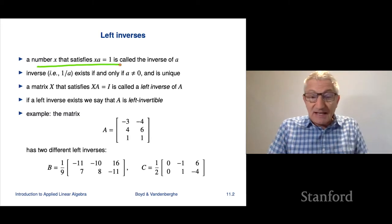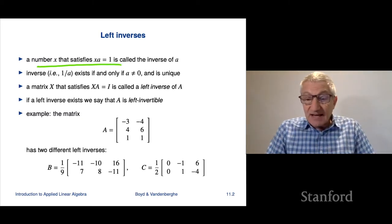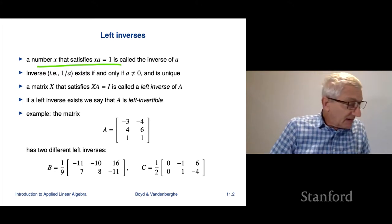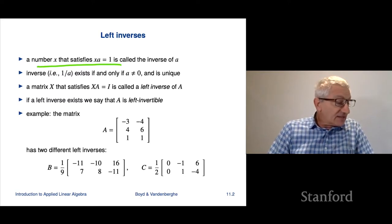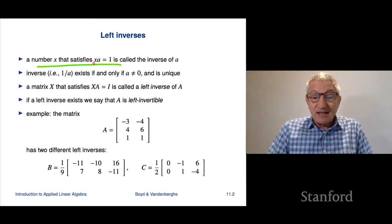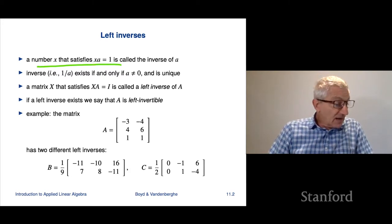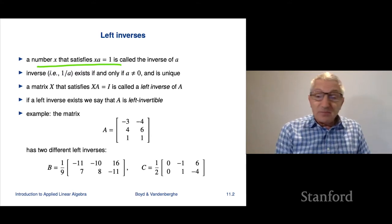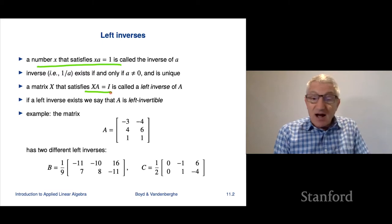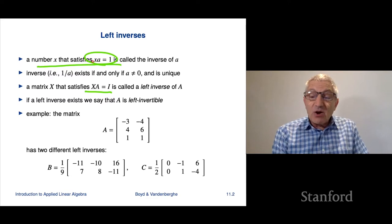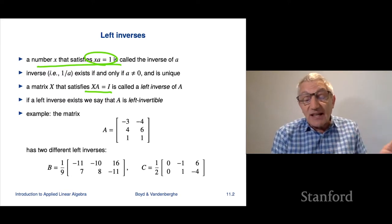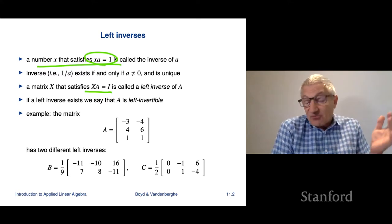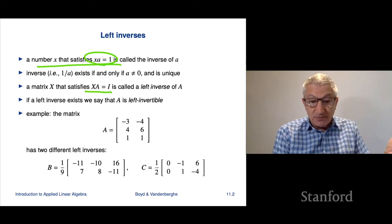Just to give a rough idea: if I have a number x and it satisfies xa equals 1 — that just means the product of it and another number a is 1 — then it's called the inverse, and we write it as 1 over a. That exists only if a is not equal to 0, because if a is 0, there's certainly no number x for which xa equals 1. There's only one inverse of 2 and it's one half. By analogy, a matrix x that satisfies xA equals I is called a left inverse — it's left because x operates on the left of A. There's also a right inverse where x operates on the right of A, and for matrices they're different because matrix multiplication is not commutative.